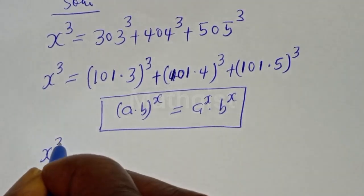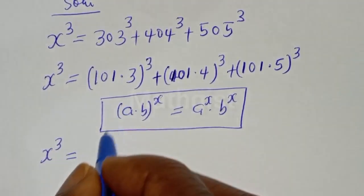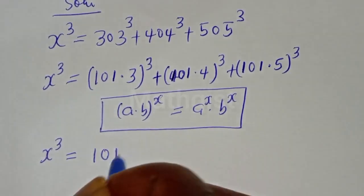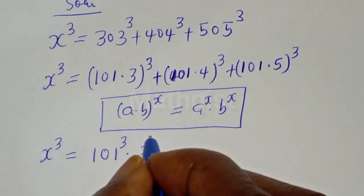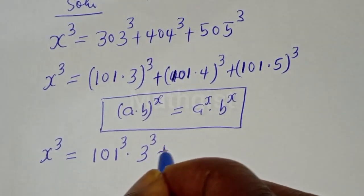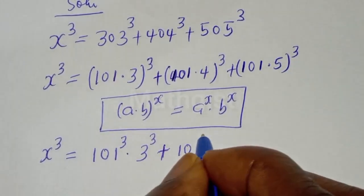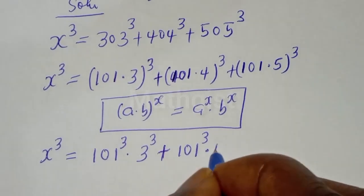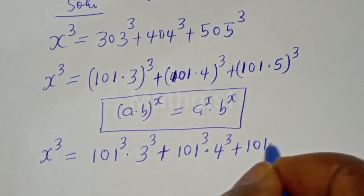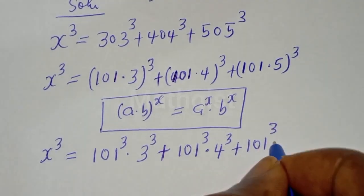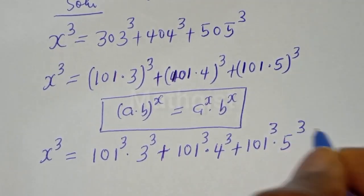So S raised to power 3 is equal to 101 to the power of 3 multiplied by 3 raised to power 3, plus 101 to the power of 3 multiplied by 4 raised to power 3, plus 101 to the power of 3 multiplied by 5 raised to power 3.